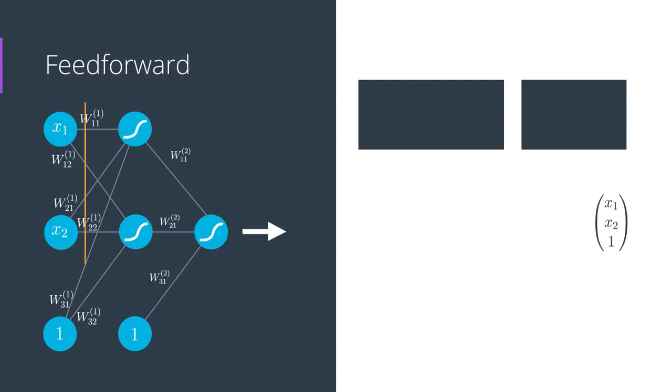Now what happens is some math. We have the input in the form x1, x2, 1, where the 1 comes from the bias unit. Now we multiply it by the matrix W1 to get these outputs. Then we apply the sigmoid function to turn the outputs into values between 0 and 1.